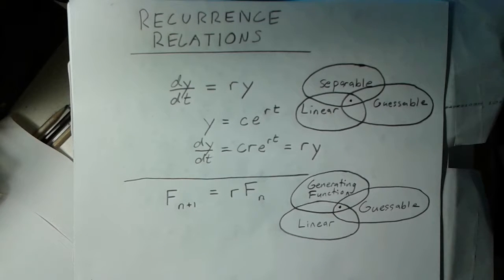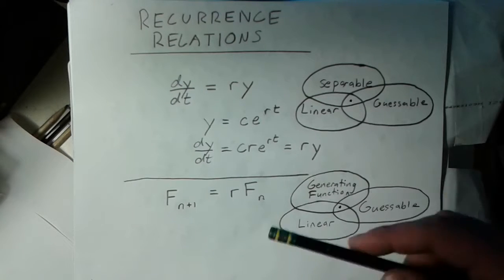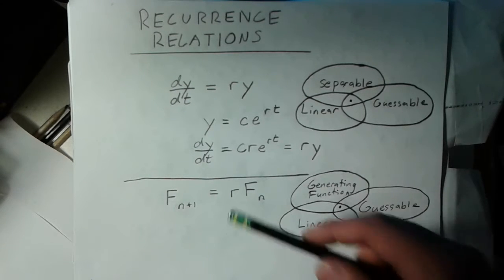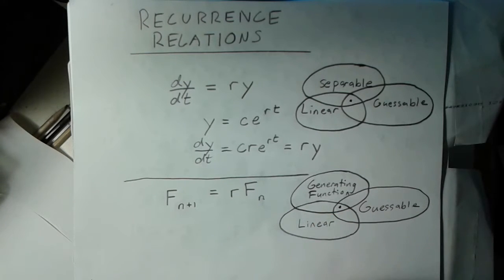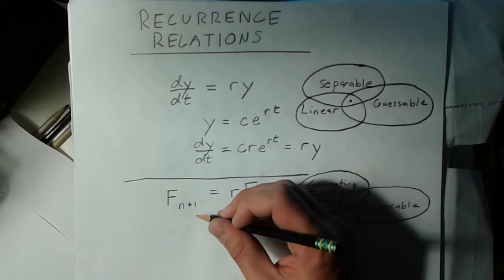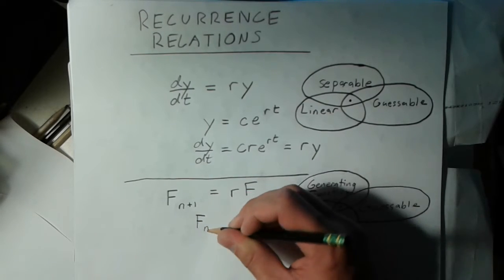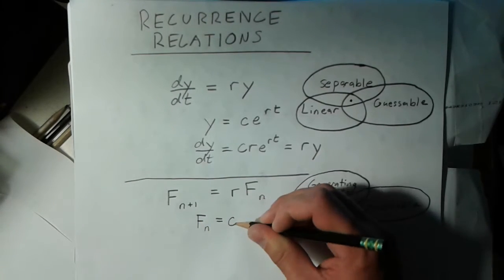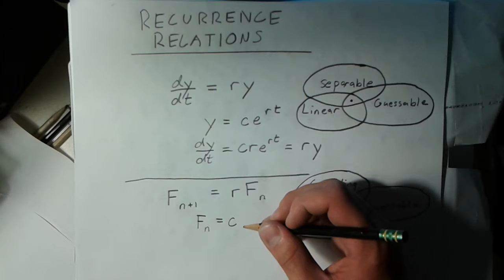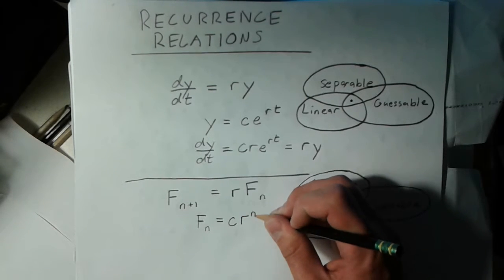One of the things I want to point out here, one of the reasons I brought up differential equations, is not just because the techniques for solving them are similar, but there are a lot of parallels between the two. The solution to this recurrence relation, I'll just tell you now and I'll prove it later, is f sub n is equal to c, an arbitrary constant, times r to the n.